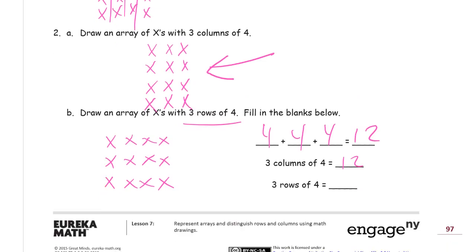I just want to draw it there so you can see what I'm looking at. That's the three columns of four up there. And here's the three rows of four right here that I just drew. They're both twelve.